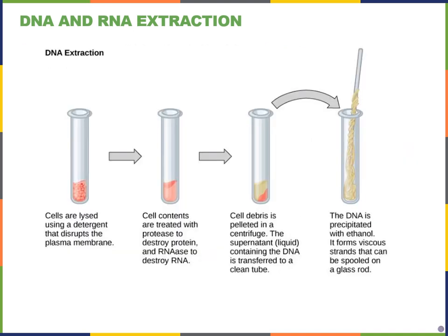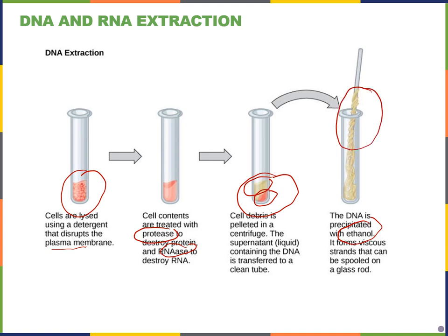Here's a summary figure of the extraction process. First, cells are lysed using detergent that disrupts the plasma membrane and the nuclear membrane. Then we treat the cell with protease or RNases to destroy protein and RNA. Then we centrifuge — the debris from the cell goes to the bottom and the supernatant, the liquid portion, will have DNA. Then we add ethanol, which precipitates the DNA out of solution, and we can pull that out of the tube, just as we did in our lab using micropipetters.